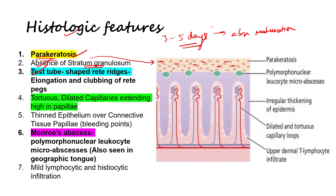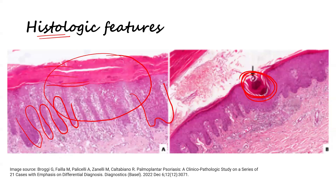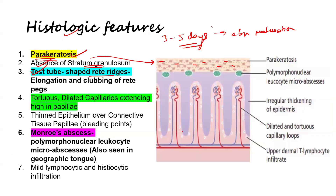Third, there are test tube-shaped rete ridges — as seen in the diagram, the rete ridges are test tube shaped and are clubbing with each other. Due to the huge amount of inflammation, there are tortuous dilated capillaries extending high into the papillae. The epithelium is thinned over the connective tissue papillae, which causes the bleeding points seen with the Auspitz sign.